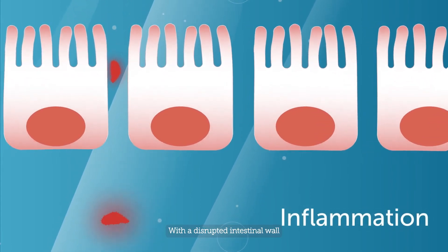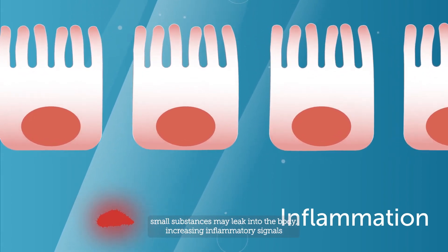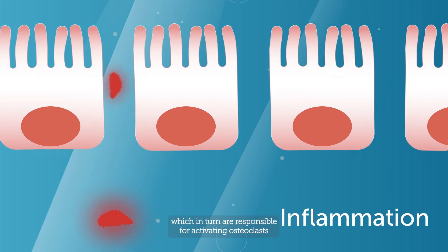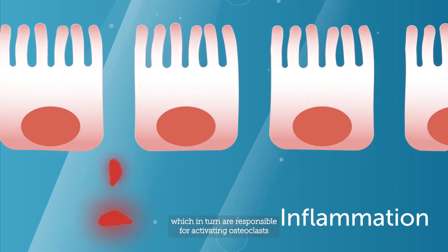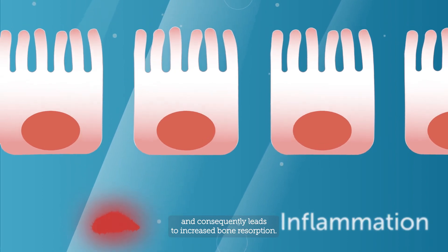With the disrupted intestinal wall, small substances may leak into the body, increasing inflammatory signals, which in turn are responsible for activating osteoclasts and consequently leads to increased bone resorption.